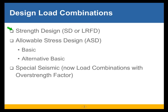The code also used to have a so-called special seismic load combination set. That has essentially now moved to ASCE7 section 12.4, and they are called load combinations with overstrength factor. Section 1605 of the code will send you there to the load combinations with overstrength factor of ASCE7 for the design of certain structural elements.